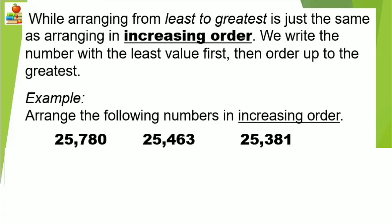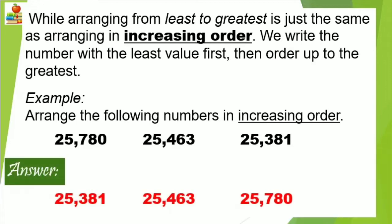Arranging from least to greatest is just the same as arranging in increasing order. Rewrite the number with the least value first, then order up to the greatest. Let's figure out this example: arrange the following numbers in increasing order. We'll write 25,381 first because it is the smallest number, followed by 25,463, and lastly 25,780 as the greatest.